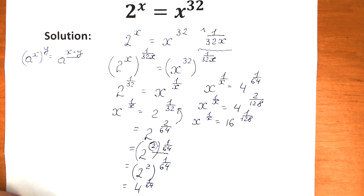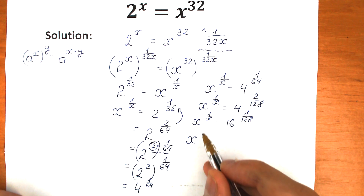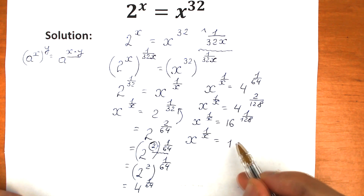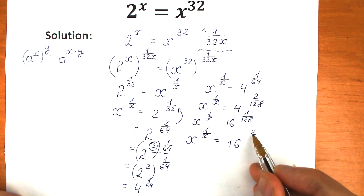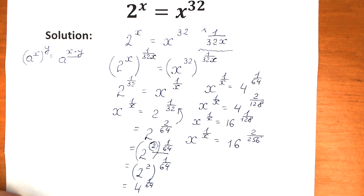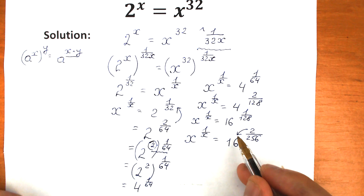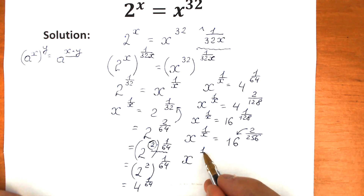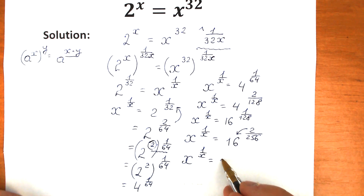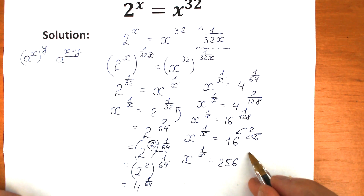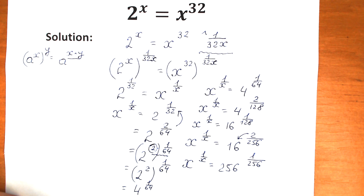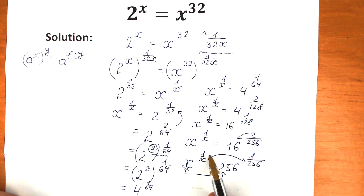One more step: x to the power 1 over x equal to 16 to the power 1 over 256, which we can write as 2 to the power 2 over 256. Applying the same trick, 16 squared is 256, raised to the power 1 over 256. So x to the power 1 over x equals 256 to the power 1 over 256. Since the expressions match exactly, x must equal 256.